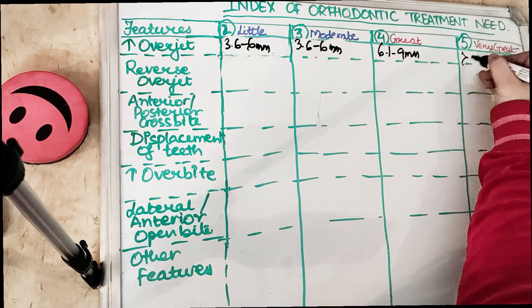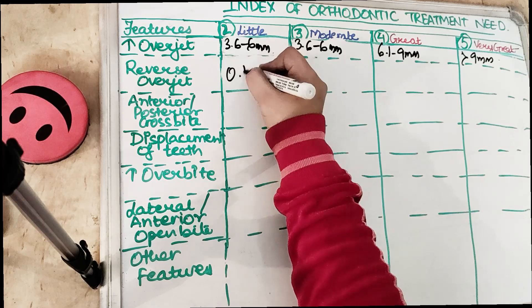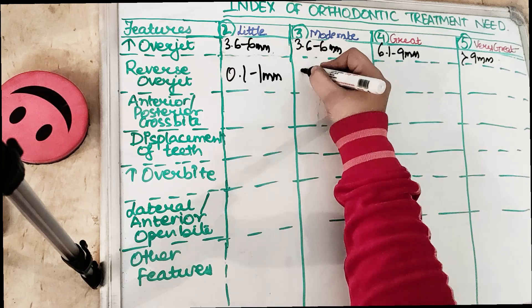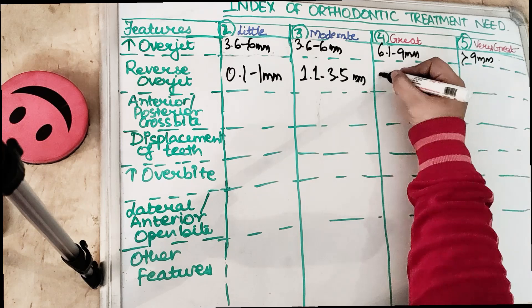Grade 4 overjet is much higher at 6.1 to 9 millimeters, and Grade 5 is more than 9 millimeters of overjet. For reverse overjet, Grade 2 is 0.1 to 1 millimeter; Grade 3 is 1.1 to 3.5 millimeters.